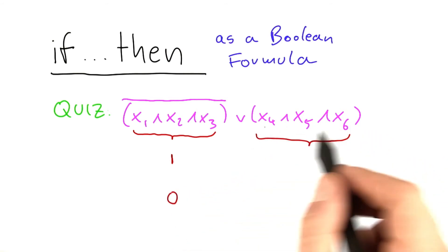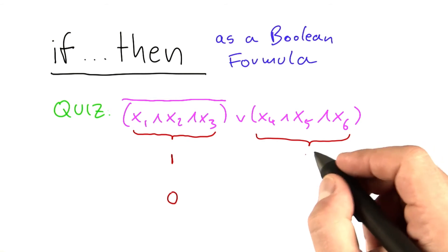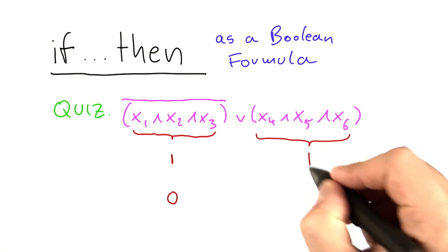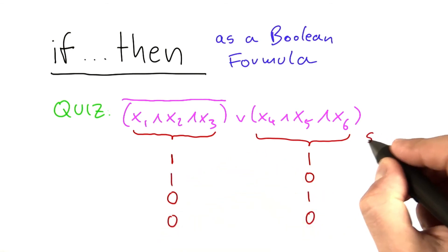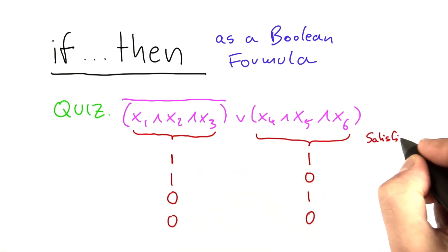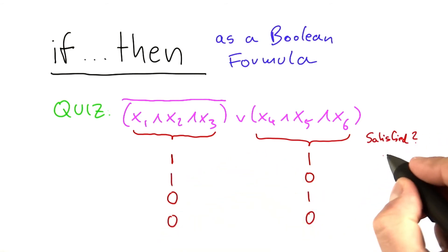And those variables over here, they're completely independent. They can, of course, also be true and false. So overall, we have four different cases. And now what I would like you to quickly tell me is, in which of these four cases here the whole Boolean formula is satisfied.